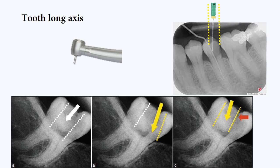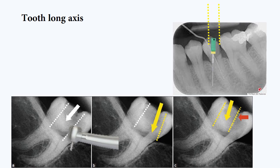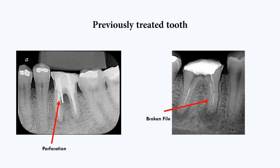Unfortunately, not all teeth have a straight axis and we should acknowledge that — otherwise you will drill the tooth and of course make a perforation, either with a file or a bur. X-ray is also mandatory when we have a previously treated tooth. Imagine starting to treat those two cases without making an X-ray — you will fail, and the patient will accuse you of this failure, and sometimes they can even sue you.